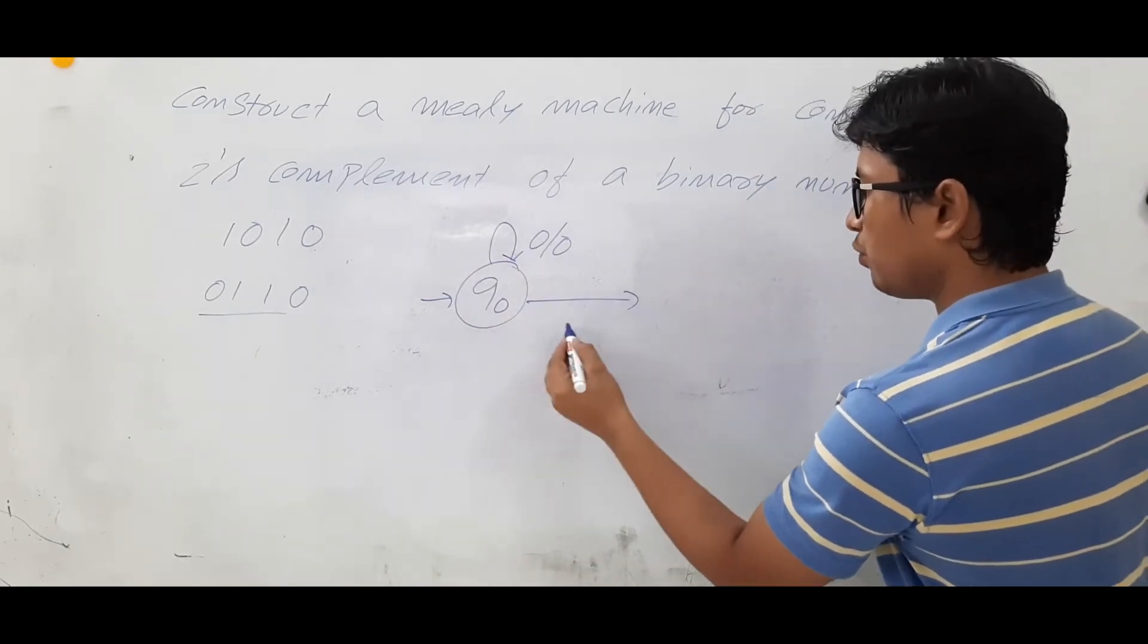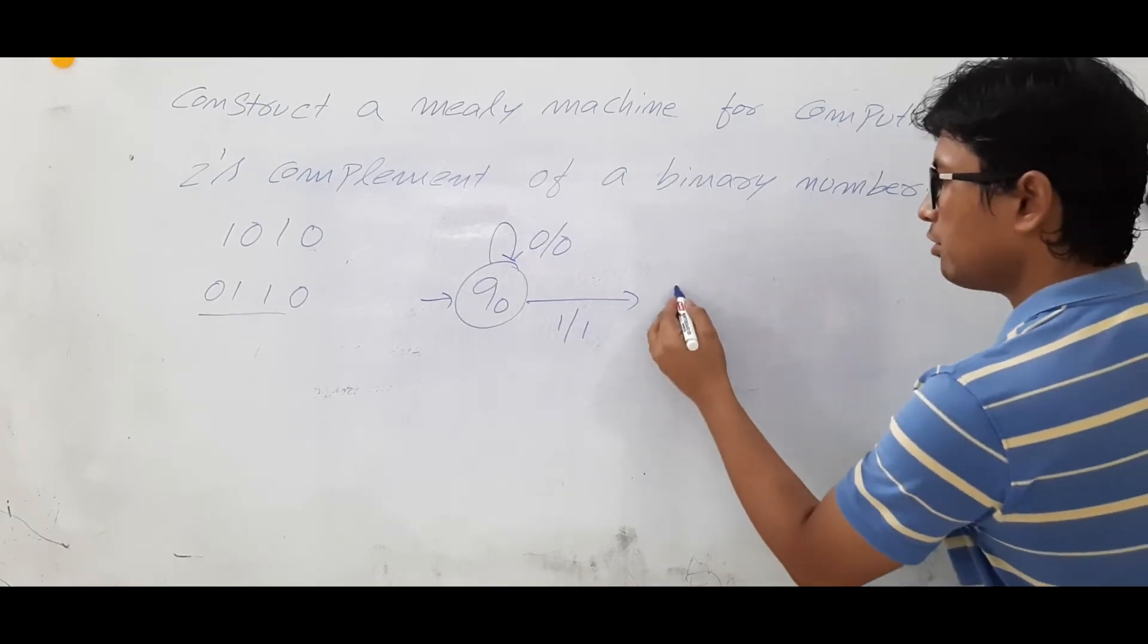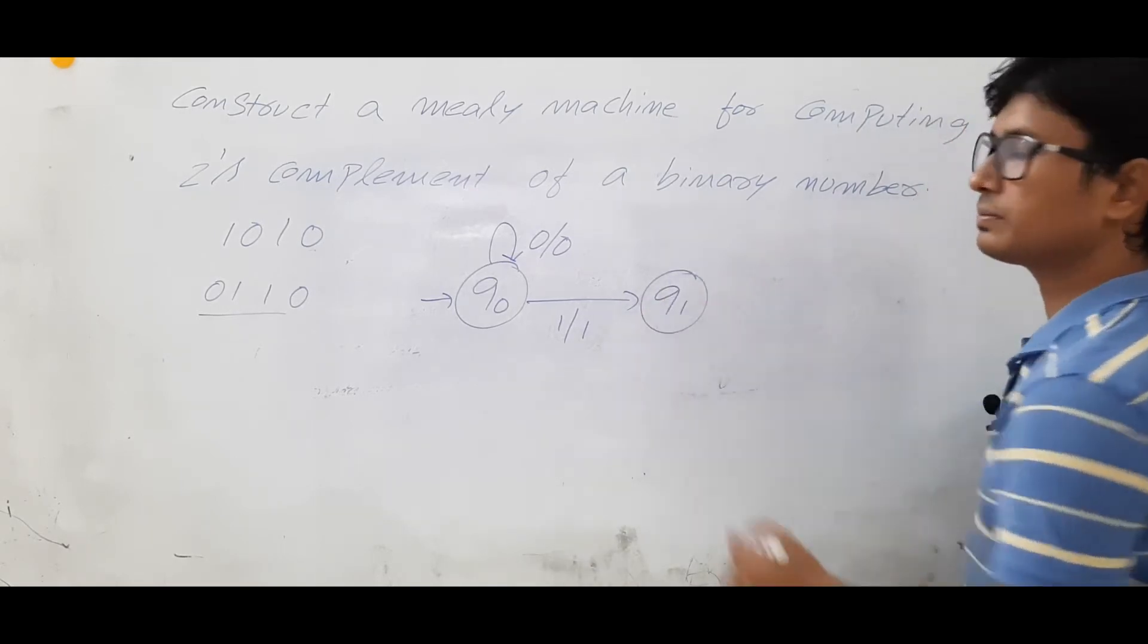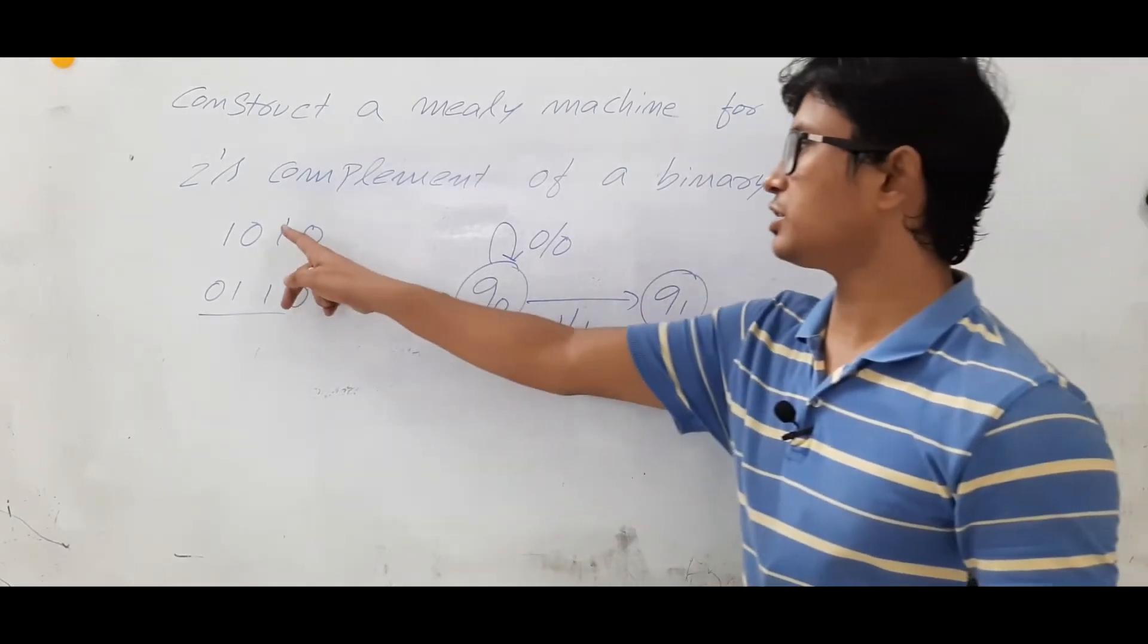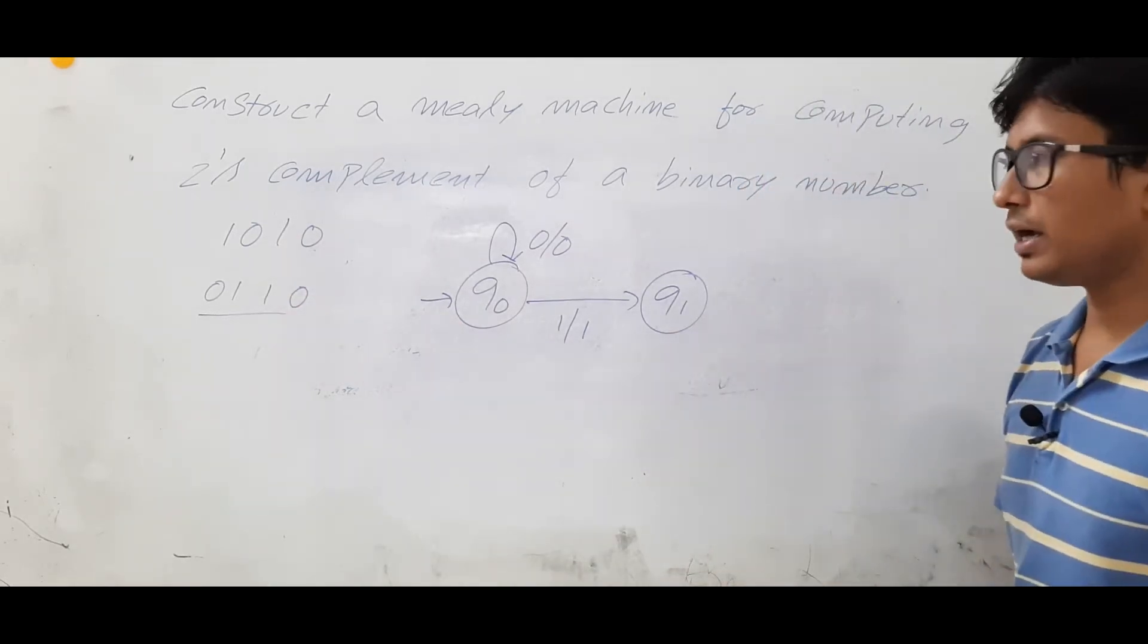If I get a 1, I will keep it as 1 and I will move to another state q1. Are you able to understand? The first one I will keep it as 1 and I will move to the another state.